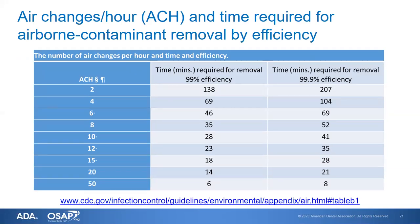Some people wonder how many air exchanges per hour are needed to clear a room of small particulates. There is a table provided in the CDC Infection Control Guidelines for Environmental Control. If you look at this chart, you'll see it's not a direct correlation between the number of air exchanges and the time required to remove particulates. For instance, if you had an ACH — air changes per hour — of two, you might think that means the air changes every 30 minutes, but that's not exactly the way it works, as the chart shows.